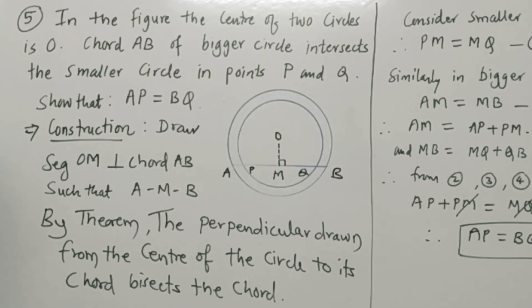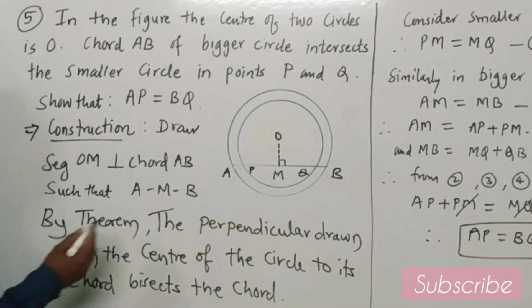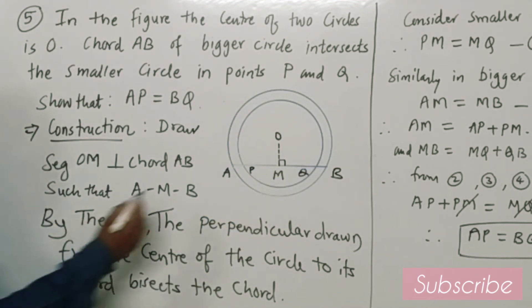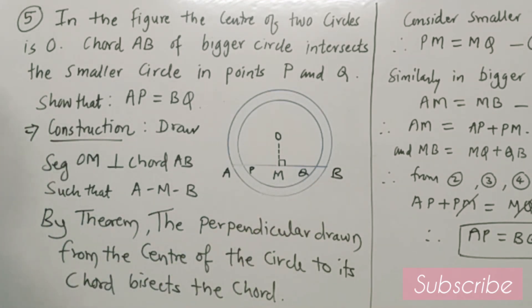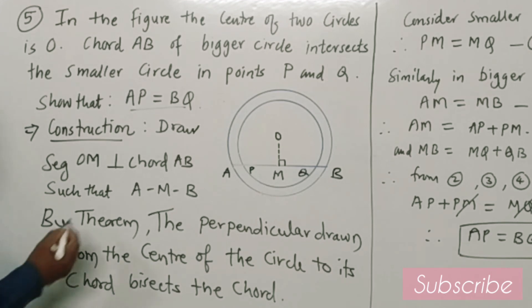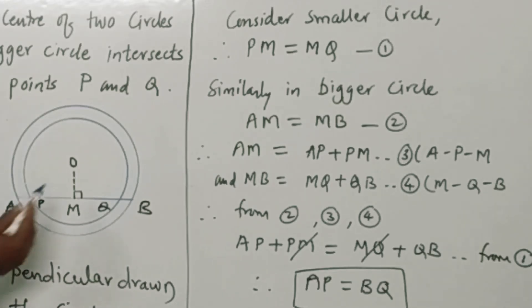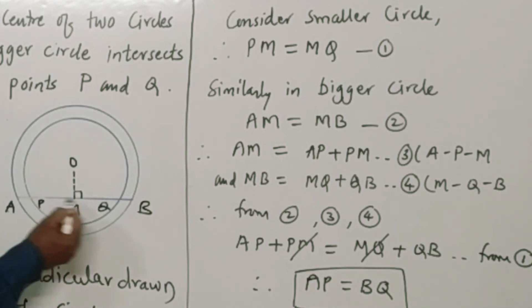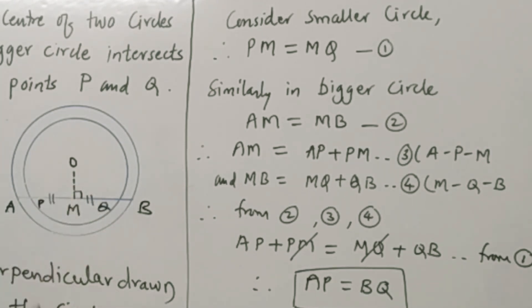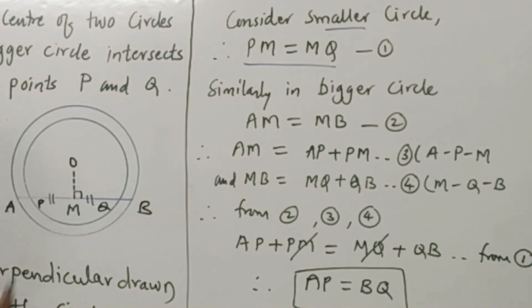Next example: in the figure, the center of the circle is O. The chord AB of the bigger circle intersects the smaller circle at points P and Q. We have to show that AP = QB. Construction: draw OM perpendicular to chord AB. By the theorem, the perpendicular from the center bisects the chord, so OM bisects chord PQ of the small circle: PM = MQ.